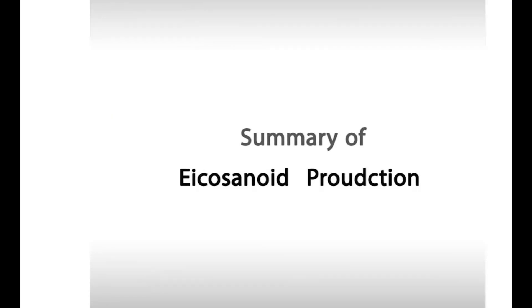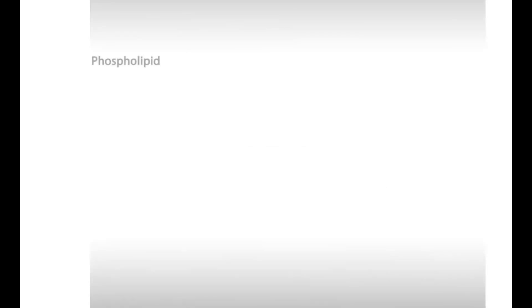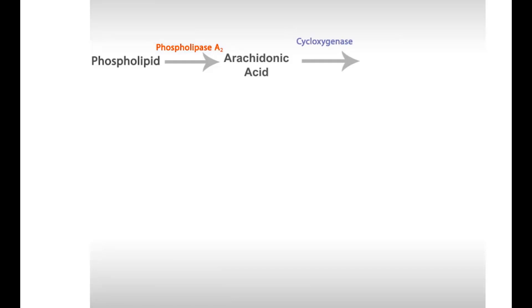Let's now have a brief summary of eicosanoid production. The cell membrane phospholipid is degraded by a phospholipase A2 enzyme to release arachidonic acid, which is modified by cyclooxygenase isoenzymes, COX-1 or COX-2, to produce the transient PGG2, which is rapidly reduced by peroxidase enzyme to PGH2.